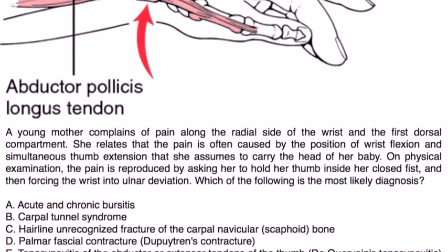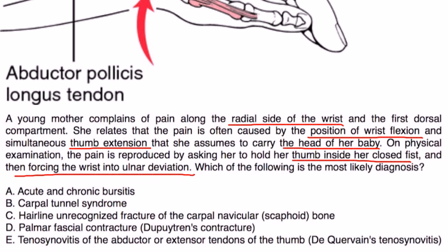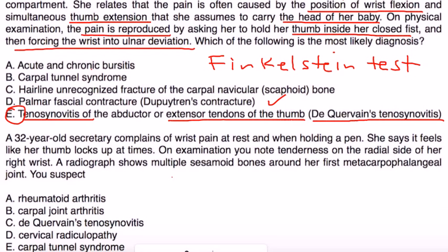A young mother complains of pain along the radial side of her wrist in the first dorsal compartment. The pain is often caused by wrist flexion with simultaneous thumb extension, as she assumes to carry the head of her baby. On physical exam, pain is reproduced by asking her to hold her thumb inside her closed fist and forcing the wrist into ulnar deviation — the Finkelstein test. She likely developed this from repetitive holding of her baby. The diagnosis is tenosynovitis of the extensor tendons of the thumb, also known as De Quervain's tenosynovitis — answer E.